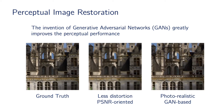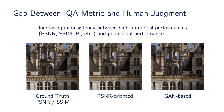Recently, perceptual-driven algorithms have been proposed to achieve photorealism in image restoration, which is different from the PSNR-oriented algorithms that try to obtain less distorted outputs. The invention of generative adversarial networks greatly improves the perceptual performance of these algorithms. However, evaluating their outputs presents a great challenge to image quality assessment, as they bring completely new characteristics to the output images.